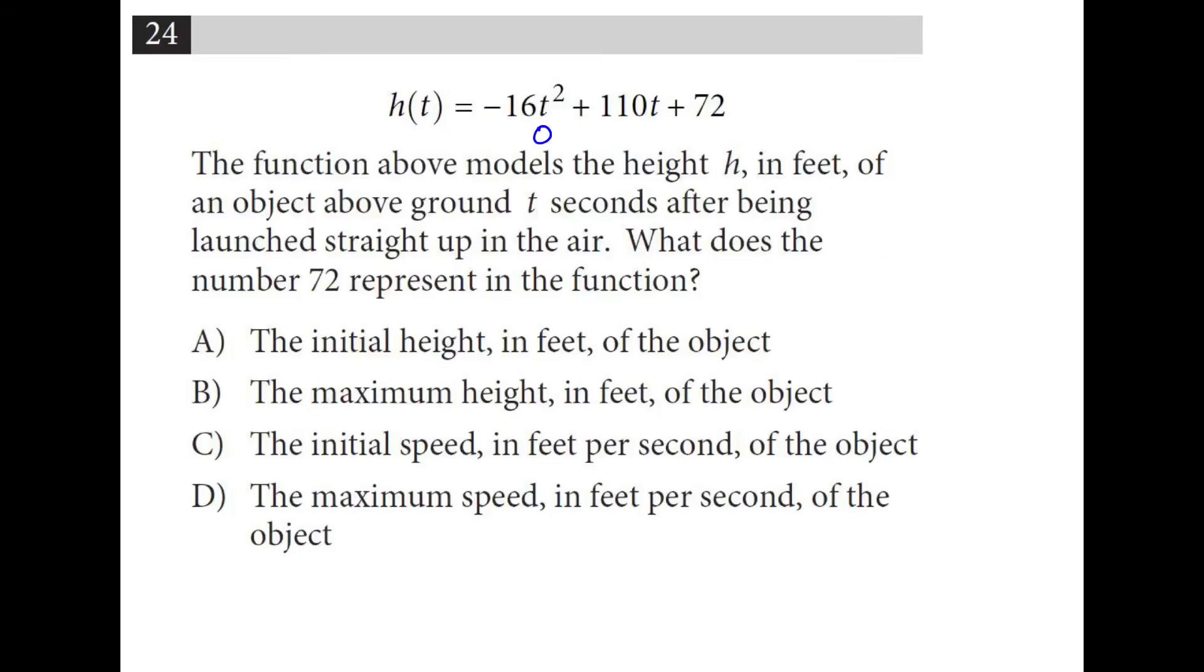So if we plug in a 0 for t, we are at 72 feet. And that tells you the initial height in feet of the object before it was launched.